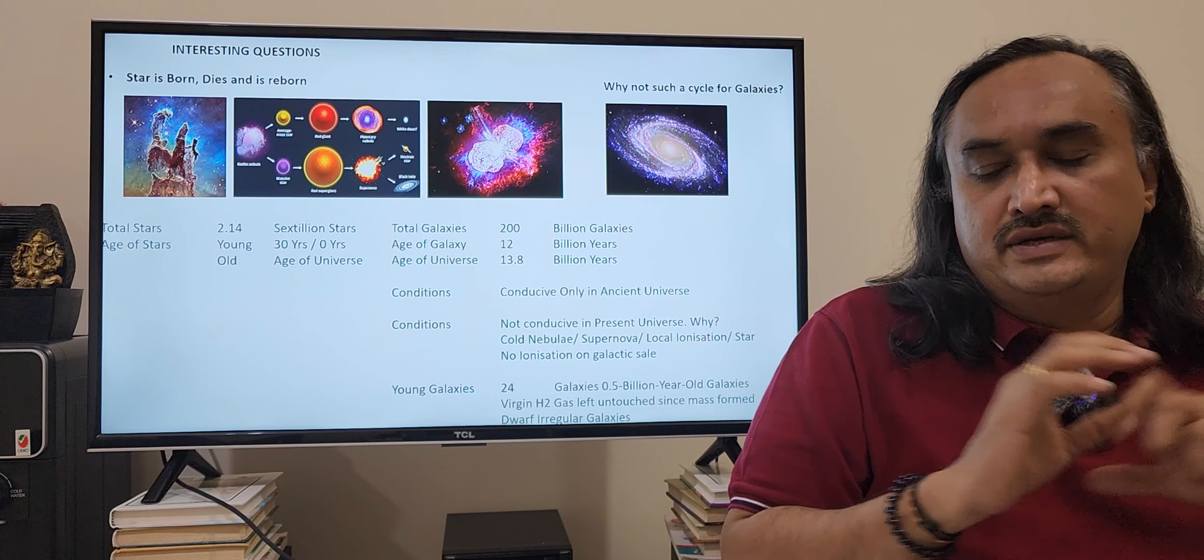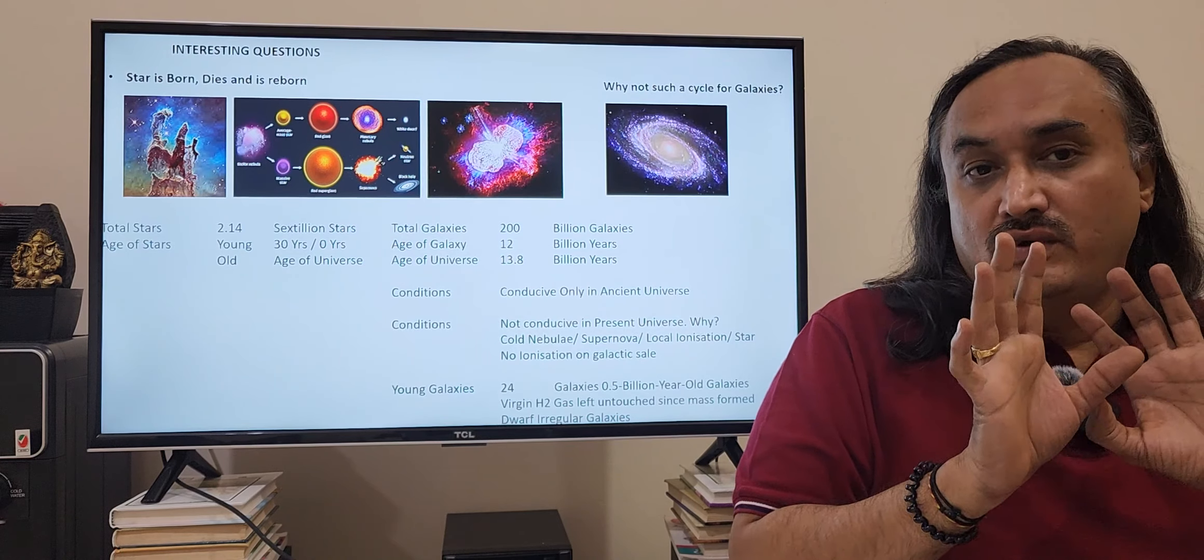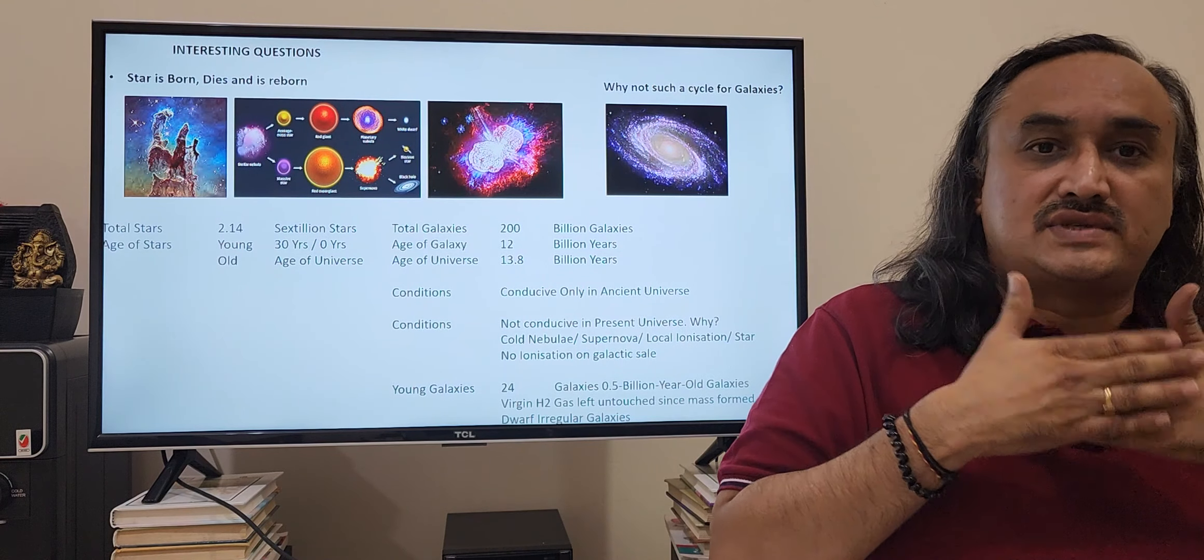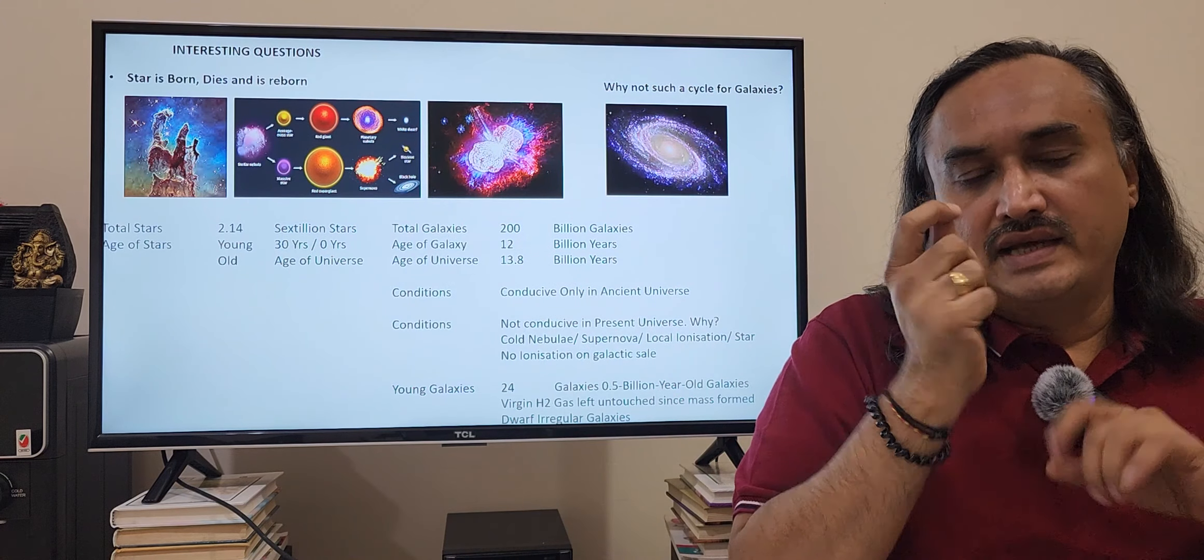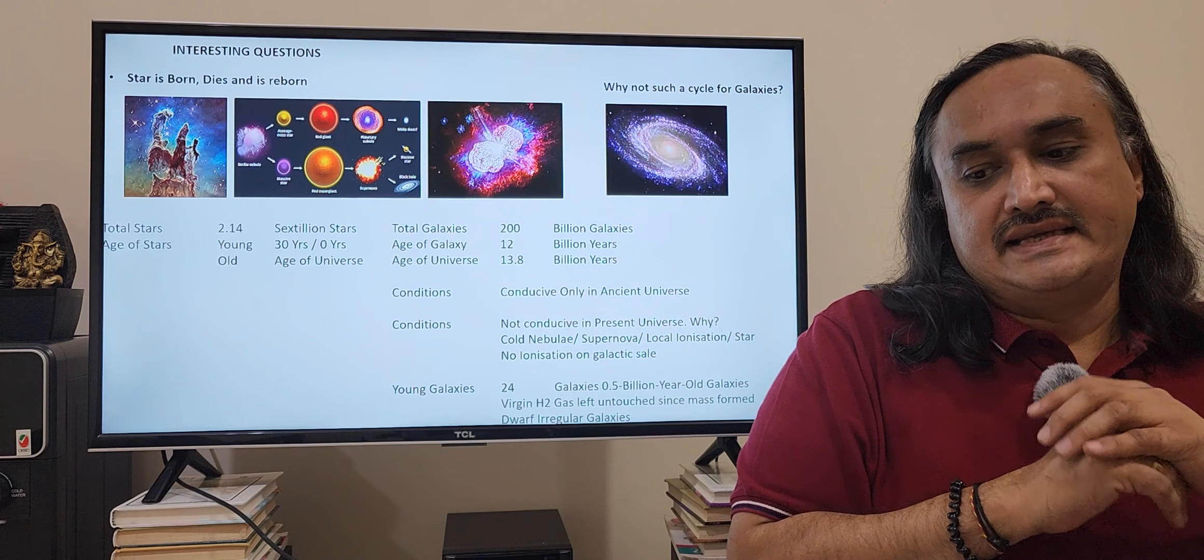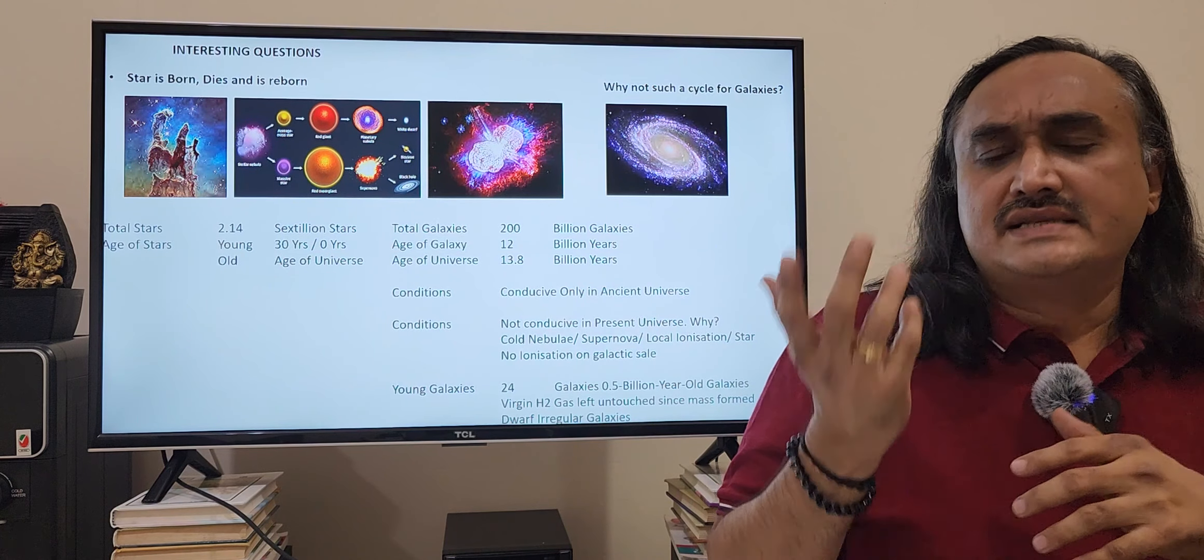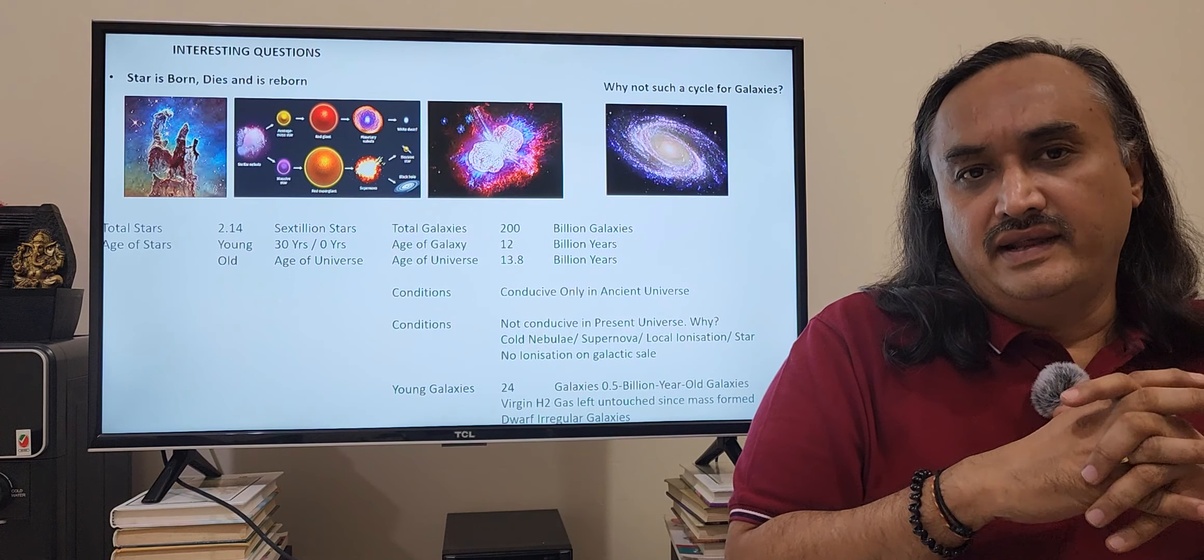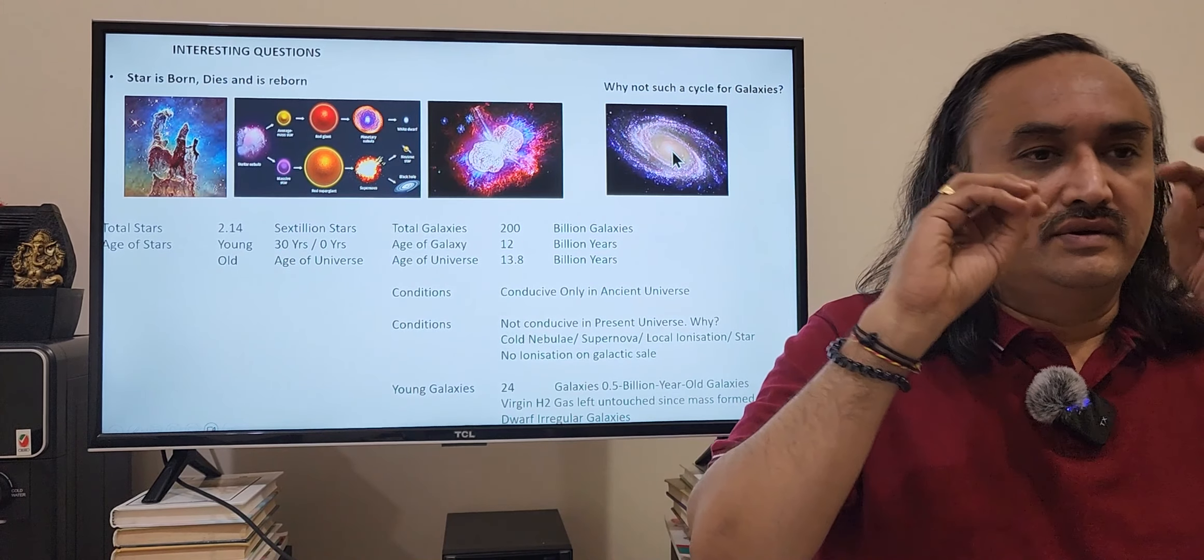There is a rider to it. There have been some galaxies, to be precise 24, just 24 of them out of 200 billion. You start counting, when you reach 10 billion you will find one galaxy which is a young galaxy, as young as half a billion years old. But these galaxies are just dwarf irregular galaxies, not the kind of galaxies that you see here, just a few stars.